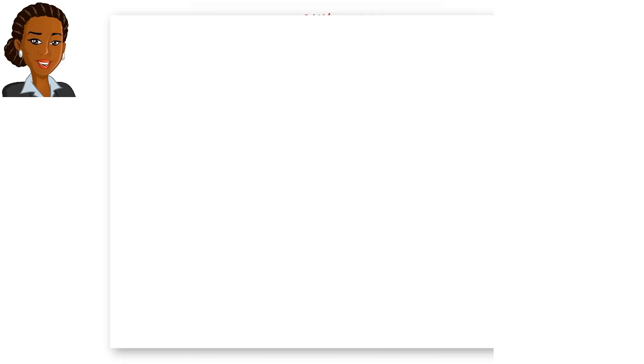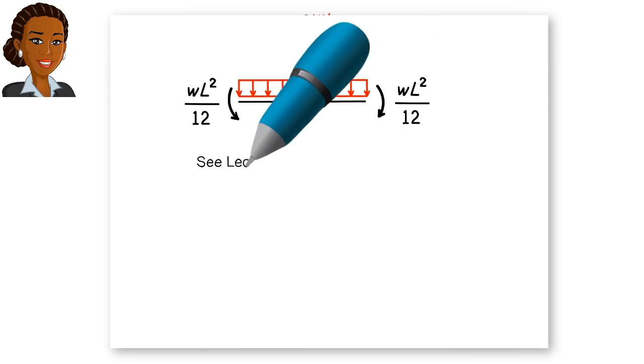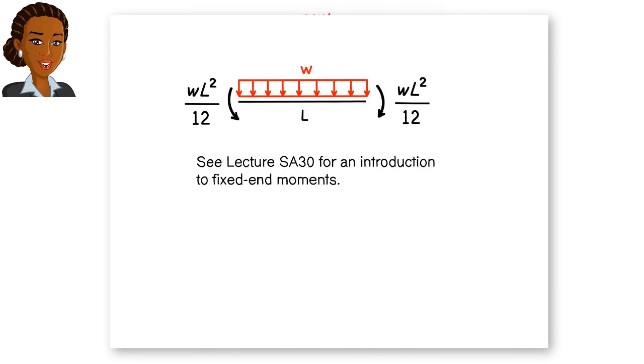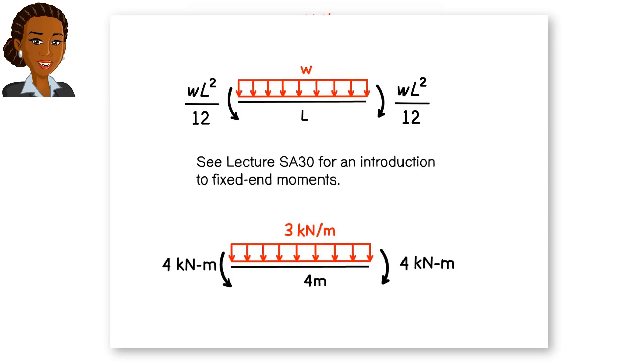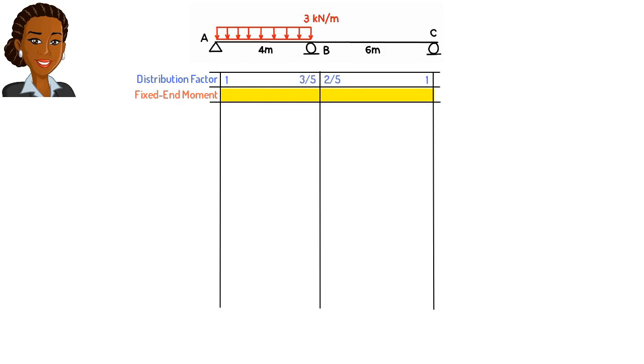Recalling from the slope deflection method, we know that a beam of length L subjected to a uniformly distributed load of W would have WL squared over 12 for its fixed end moments. In our case, this means the left and right fixed-end moments for AB each has a magnitude of 4 kNm. The left moment, since it is counterclockwise, is considered positive, and the right moment is considered negative. We enter these values in our table like this. These are considered the initial moments at joints A and B to be balanced once the iterative process begins.